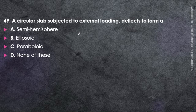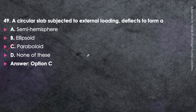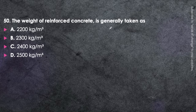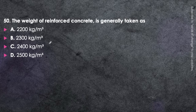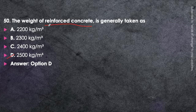Next question: A circular slab subjected to external loading deflects to form a paraboloid — option C. Next question: The weight of reinforced concrete is generally taken as 2500 kg/m³ — option D. For plain concrete (unreinforced), the weight is taken as 2400 kg/m³. Memorize both values — they are important.